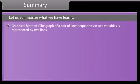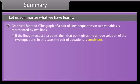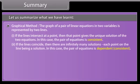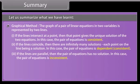Graphical method summary: The graph of a pair of linear equations is represented by two lines. 1. If the lines intersect at a point, that point gives the unique solution — the pair is consistent. 2. If the lines coincide, there are infinitely many solutions, each point on the line being a solution — the pair is dependent and consistent. 3. If the lines are parallel, the pair has no solution and is inconsistent.